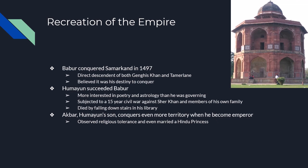Babur dies in 1530 because of an unknown illness, and he's replaced by his son Humayun. According to legend, Babur bargains with Allah to take his life instead of Humayun's — Humayun was very sick and expected to die. After making this deal with Allah, Humayun begins to get better while Babur grows weaker, and when Humayun is completely healed, Babur finally passes away. Whether that was divine intervention or just coincidence, we may never know.